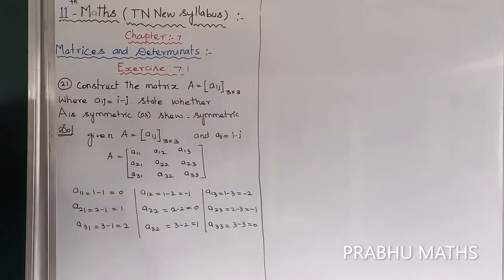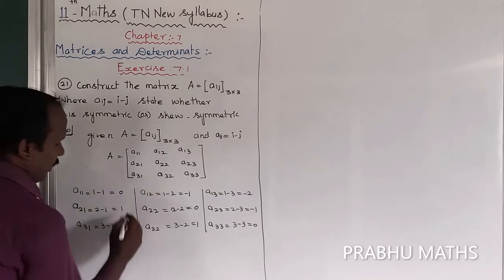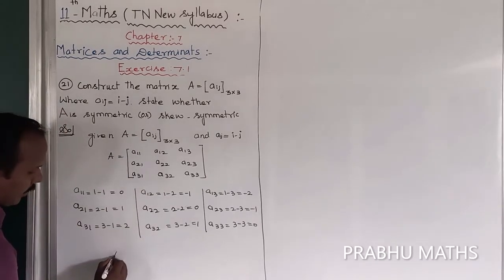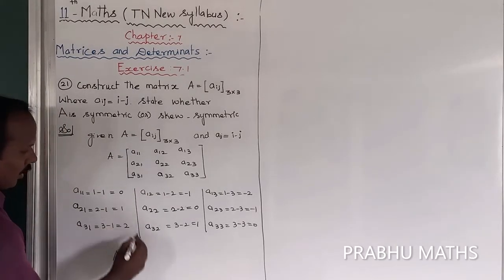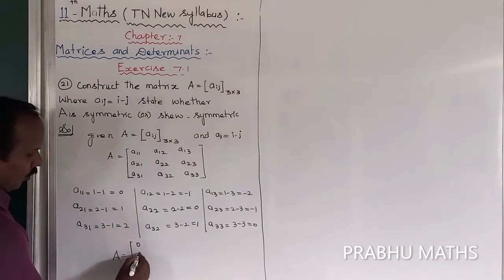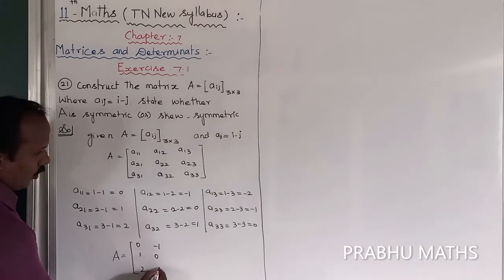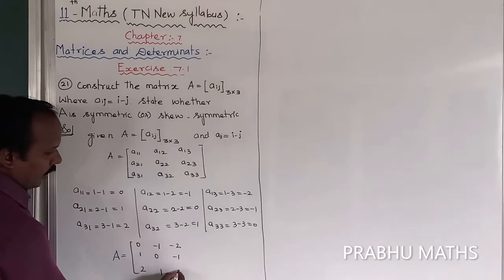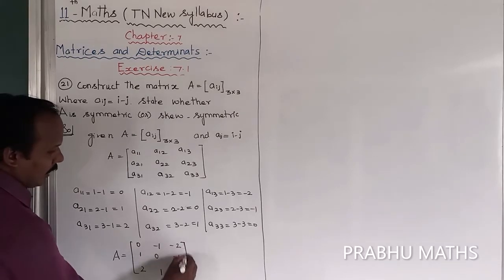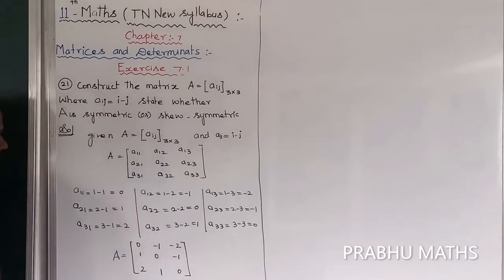So all entries are found. The formation of matrix A is: A is equal to [0, minus 1, minus 2; 1, 0, minus 1; 2, 1, 0]. That is the matrix A.